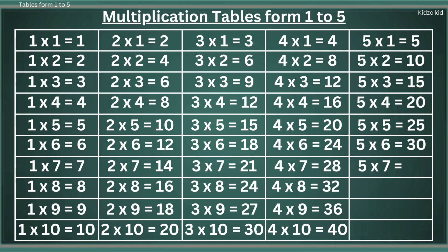5 7s are 35, 5 8s are 40, 5 9s are 45, 5 10s are 50.